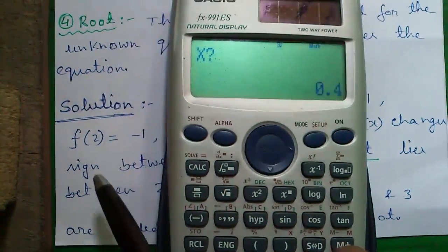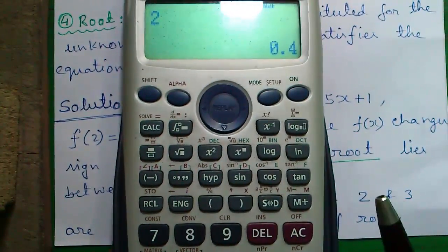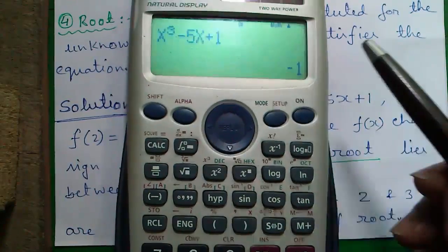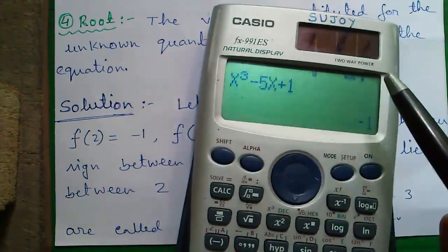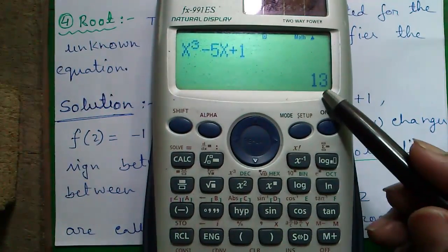And when you enter x = 2 that is enter 2 and press equals to you will get -1. Similarly, when you will enter x = 3 you will get 13.